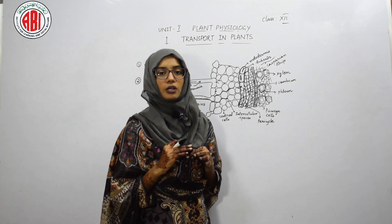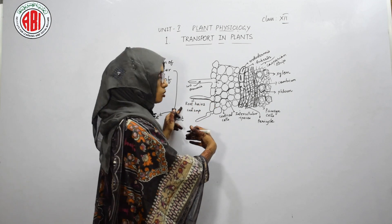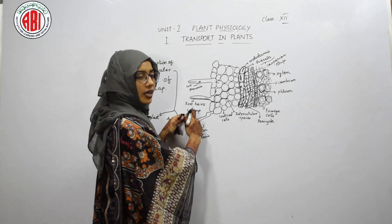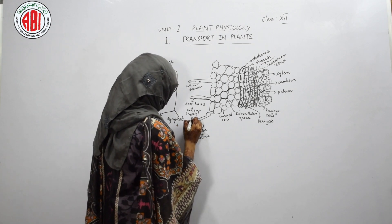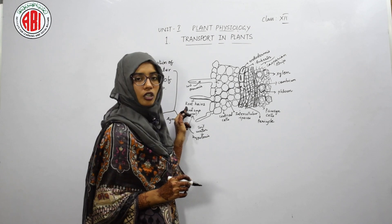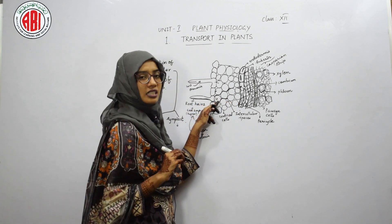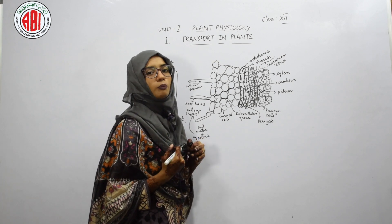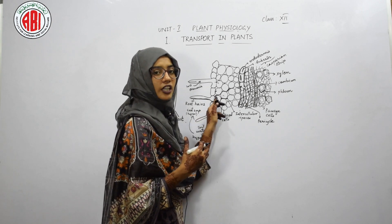We know water moves from a region of high water potential to lower water potential. The soil water is hypotonic — less concentrated — when compared to the cell sap present in the root hairs. So the cell sap is hypertonic and water moves from hypotonic to hypertonic. In this way, the cell sap absorbs the water from the soil. Then the water absorbed by the cell sap is less concentrated when compared to the cortical cells, which show higher concentration. This difference in concentration helps water move from one cell to another through plasmodesmata.